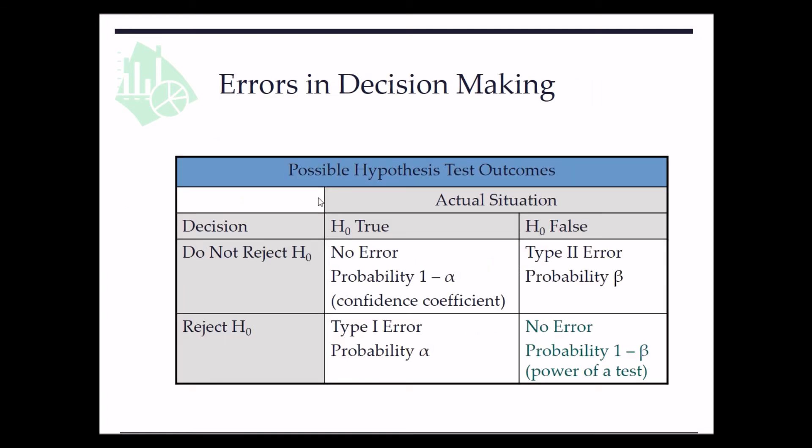So here we have a table regarding possible hypothesis test outcomes with or without errors. When H0 is true, when we do not reject H0, we make no error. If we reject H0, we have a type 1 error. We control the probability of type 1 error to be alpha.